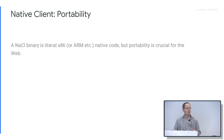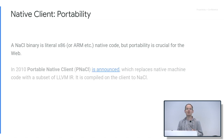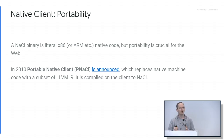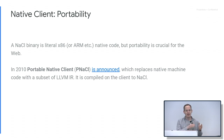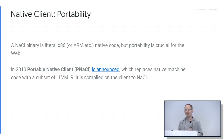One issue you might have been thinking about is portability. NaCl is specific to a CPU architecture, which is not great because we don't want to ship just native x86 or ARM — we need to ship something portable so you can view a website no matter what CPU you have. This was not a surprise, and in 2010 Portable Native Client was launched — PNaCl. It basically replaces that native machine code with LLVM IR, the internal representation of the LLVM compiler. You compile the code halfway, ship that over the network, then finish the compilation on the user's machine where you know their CPU architecture. On the client you finish compilation to NaCl with the same sandboxing and safety.